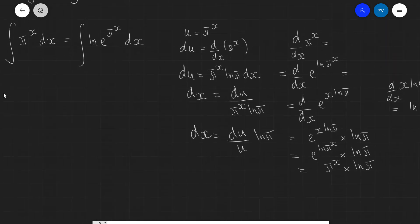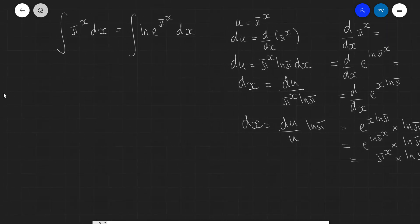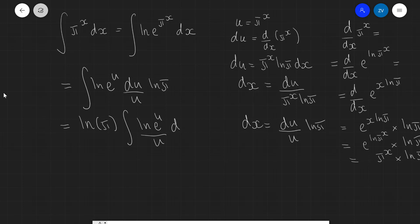Okay, well, let's substitute back into our original integral. And we can say that this is going to equal the integral of ln e^u times du over u times the natural log of π. Now, the natural log of π is just a number, so I'm going to take that out of the integration sign. This is just a constant.